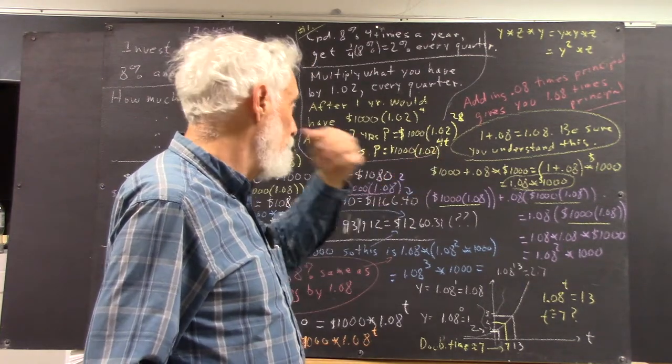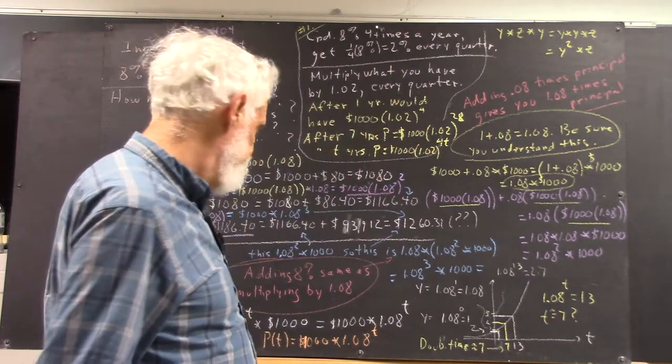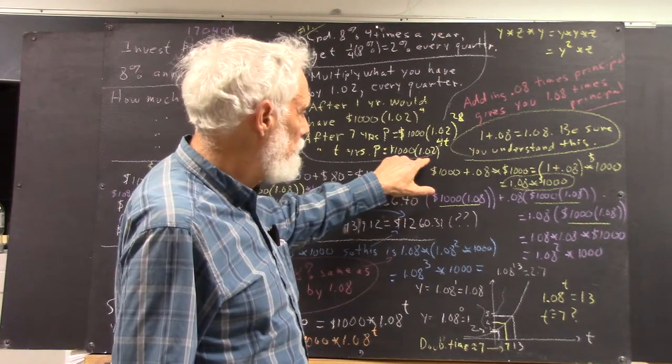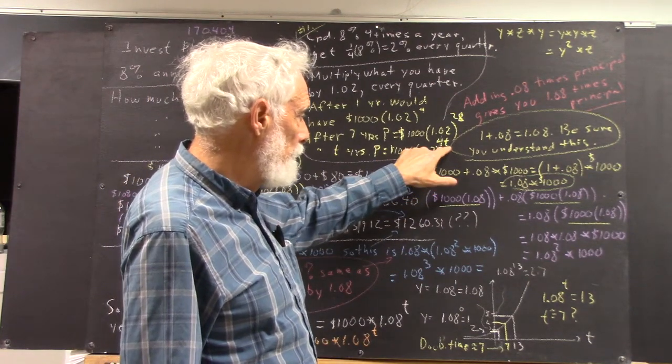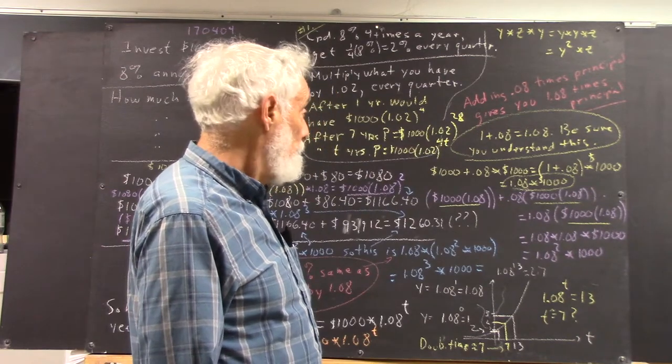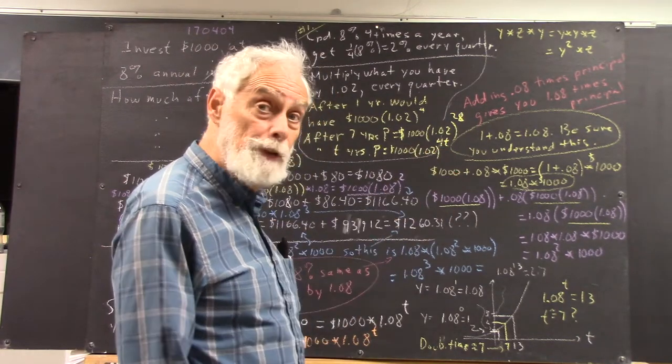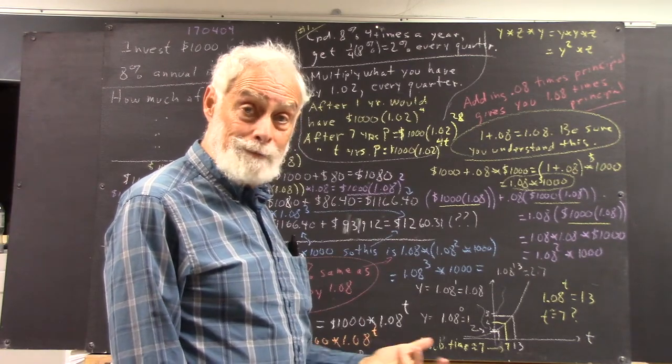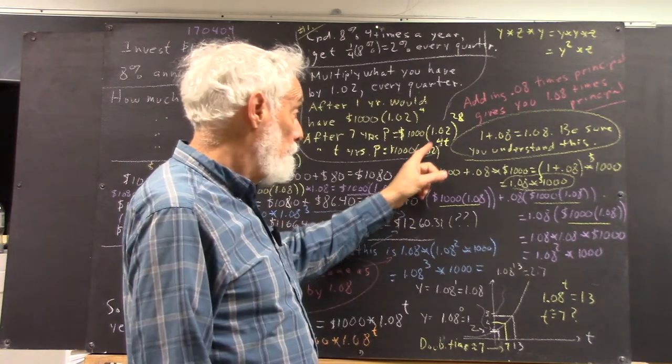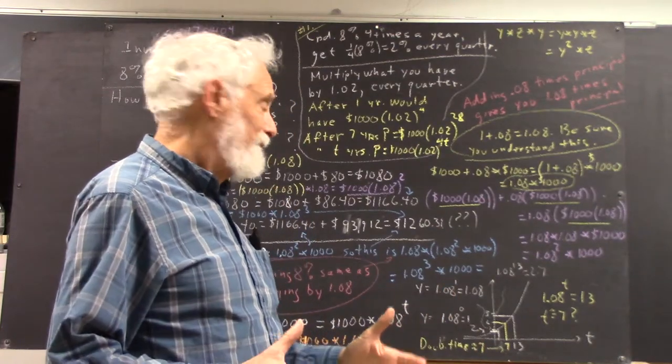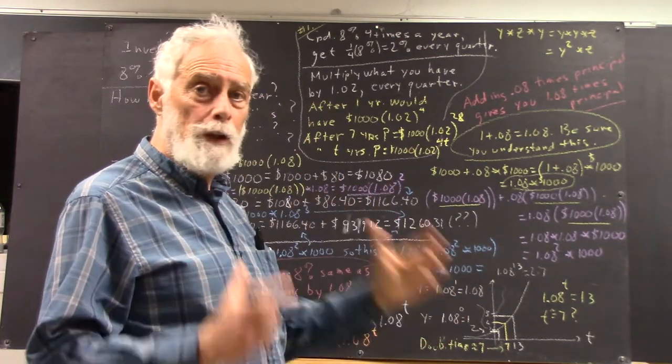Now, this isn't actually, an exponential function would just be some number raised to the t. Well, in a minute, we'll see that this really is the same as some number raised to the t, and we'll see what that number is. I'll give you a little preview. It's going to end up being 1.02 to the 4th because of the laws of exponents.